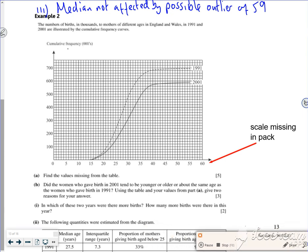So this is example two. It says a number of births in thousands to mothers of different ages in different years. So first of all I took the 1991 data to go up to 700,000 and I took the 2001 data to go up to 600,000. I'm not entirely certain that's 100% accurate but who cares.